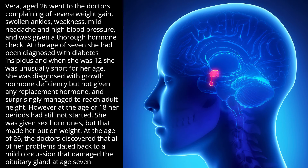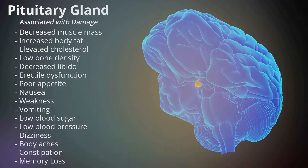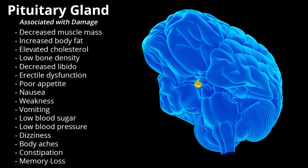At the age of 18, her periods had still not started; she was given sex hormones, but that made her put on weight. At the age of 26, the doctors discovered that all of her problems dated back to a mild concussion that damaged the pituitary gland at age 7. Associated cognitive disorders include decreased muscle mass, increased body fat, elevated cholesterol, low bone density, decreased libido, erectile dysfunction, poor appetite, nausea, weakness, vomiting, low blood sugar, low blood pressure, dizziness, body aches, constipation, and memory loss.